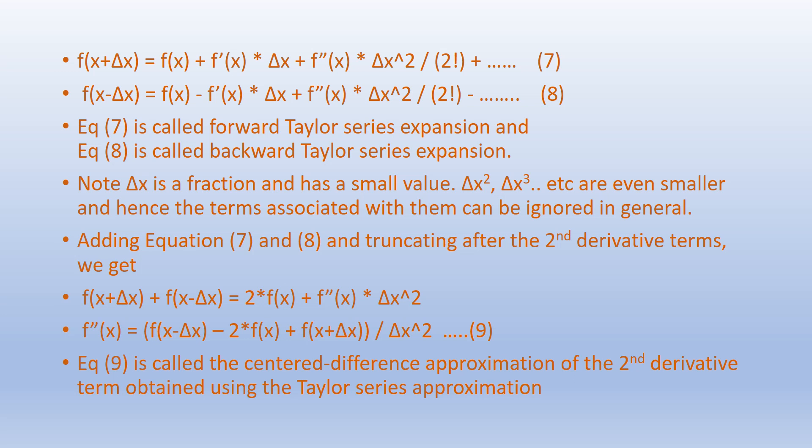Adding the forward and backward Taylor series expansions and truncating after the second derivative terms, we get: f(x + Δx) + f(x − Δx) = 2f(x) + f''(x)·Δx². From this, we get f''(x) = [f(x − Δx) − 2f(x) + f(x + Δx)] / Δx². This is called the central difference approximation of the second derivative term, obtained using Taylor series approximation.